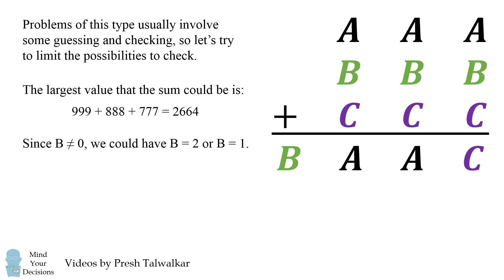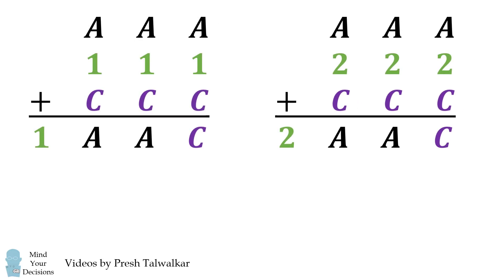So now let's further limit the number of possibilities using what we've just figured out. We have two cases where B is either equal to 1 or B is equal to 2. Now let's consider the sum in the units column. Notice we have A plus 1 plus C is equal to C. In other words, A plus 1 plus C is equal to C plus 10. If we cancel out the C, we have that A plus 1 is equal to 10. This means that A is equal to 9.